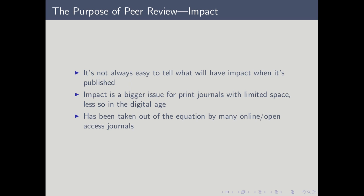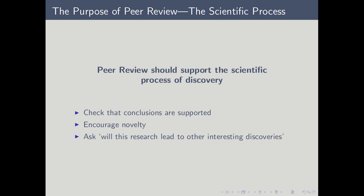This was a bigger issue for print journals where you can only publish so many papers. In the digital age, this has more or less been taken out of the equation, especially starting with PLOS in 2006. My view is that peer review should support the scientific process of discovery. This brings a balance between quality and impact and all the factors that go into it. We need to check that conclusions are supported by the data, there are qualitative variations on this, you need to have a logical discussion, the paper should encourage novelty, and you can ask whether publishing this paper will help push the field forward and may lead to other interesting discoveries.